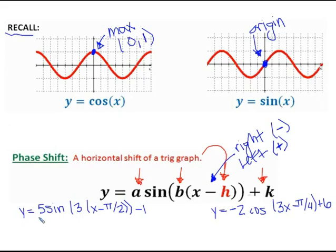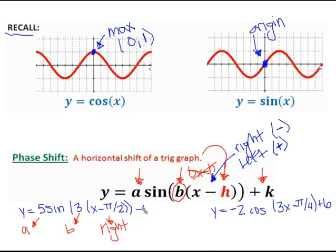The 5 out front is our a value — that's our amplitude. Notice how in the general equation, the b value is factored away from the x; it's not like bx minus h. We want to see a number kind of all by itself trapped inside the parentheses. In this case, the 3 is the b value. Notice how we're subtracting π/2, so it's going to move right. And if we're subtracting 1 on the outside, it's going to move down.